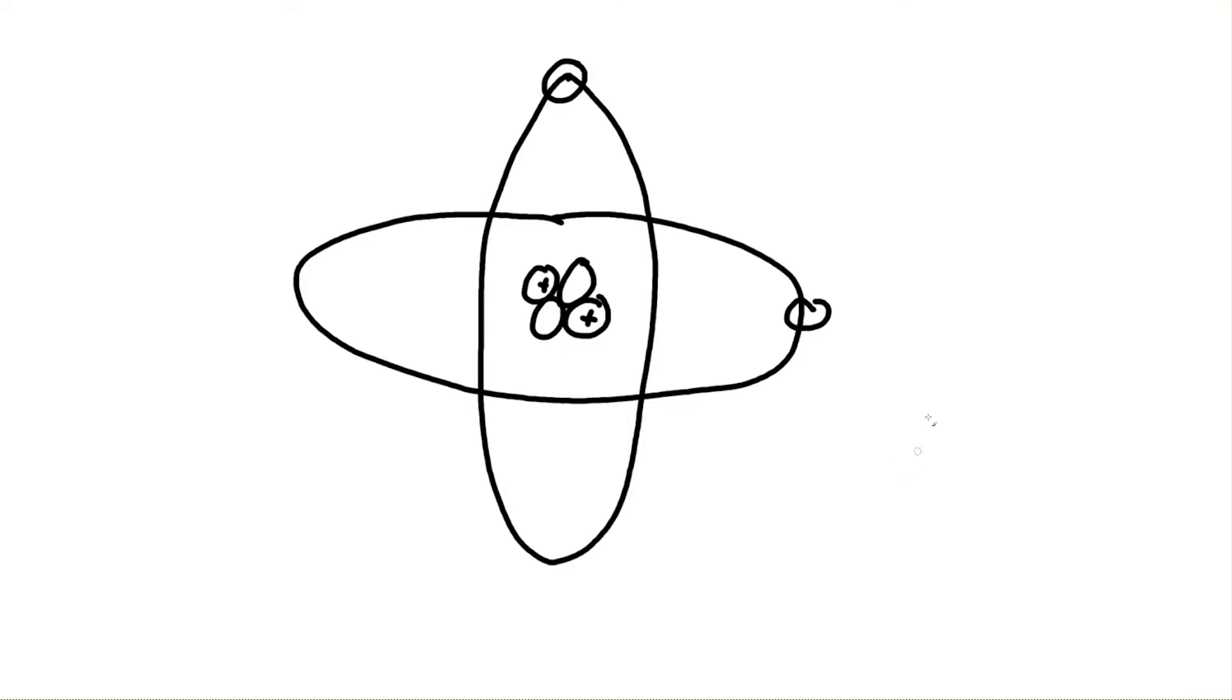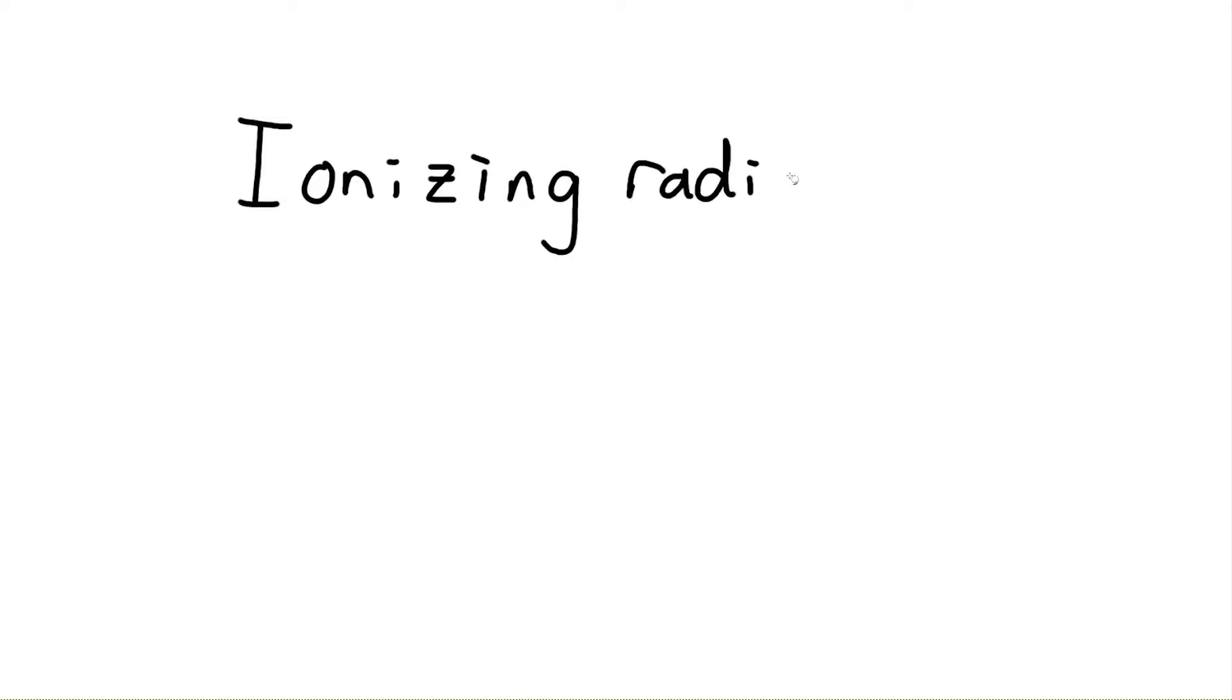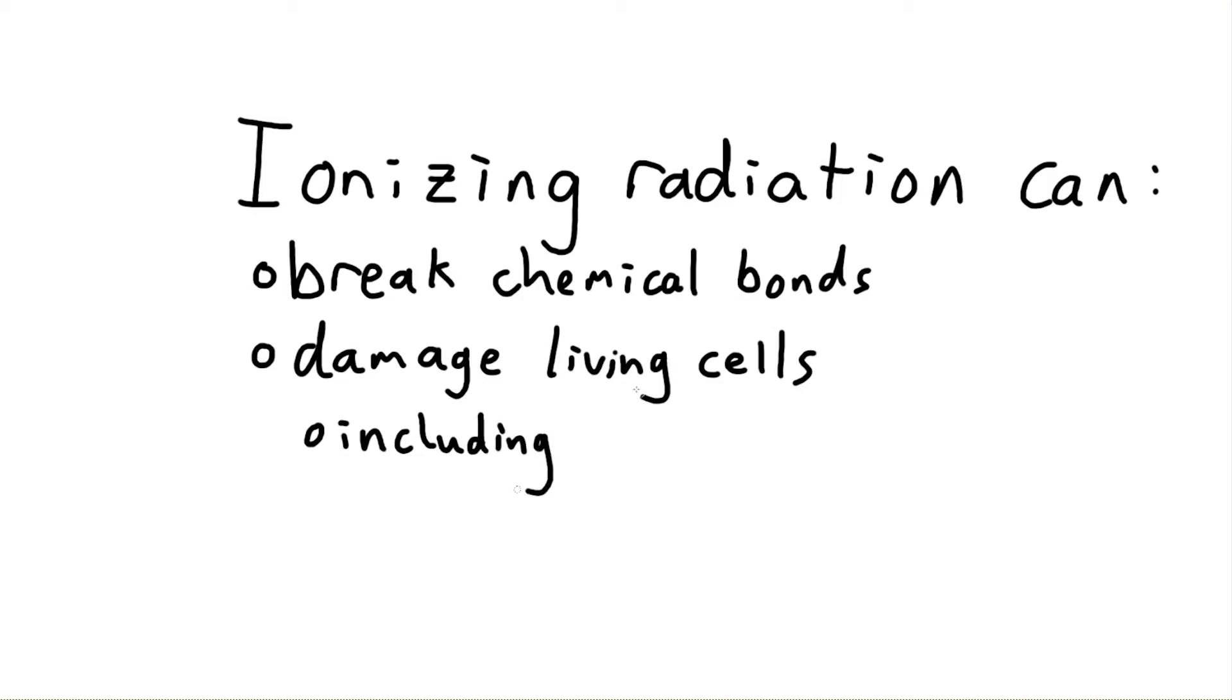Ionizing radiation, therefore, is when a radioactive particle collides with an atom and ejects an electron from that atom, which leaves the atom ionized. Ionizing radiation can cause chemical bonds to collapse and damage cells in your body, namely your DNA, which is how radiation harms you. However, that's a topic for another video. Just know that radiation and DNA don't mix.